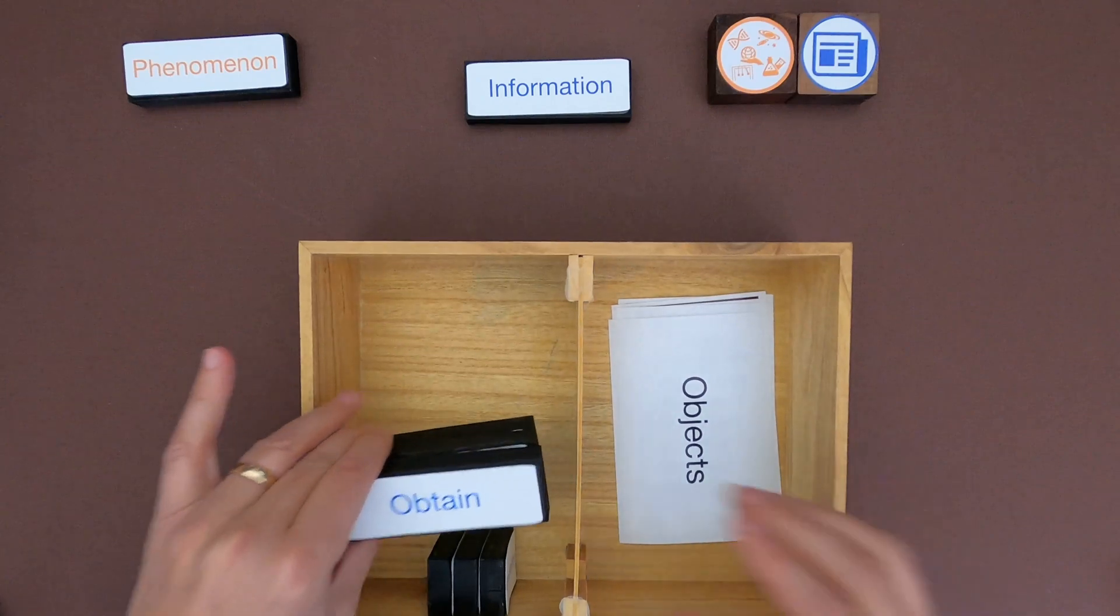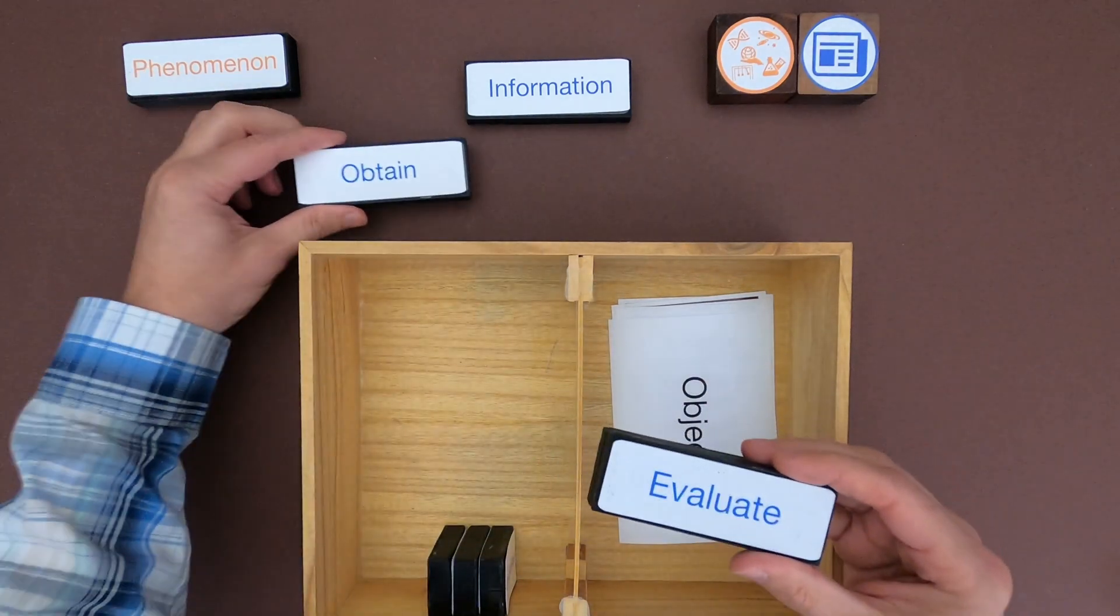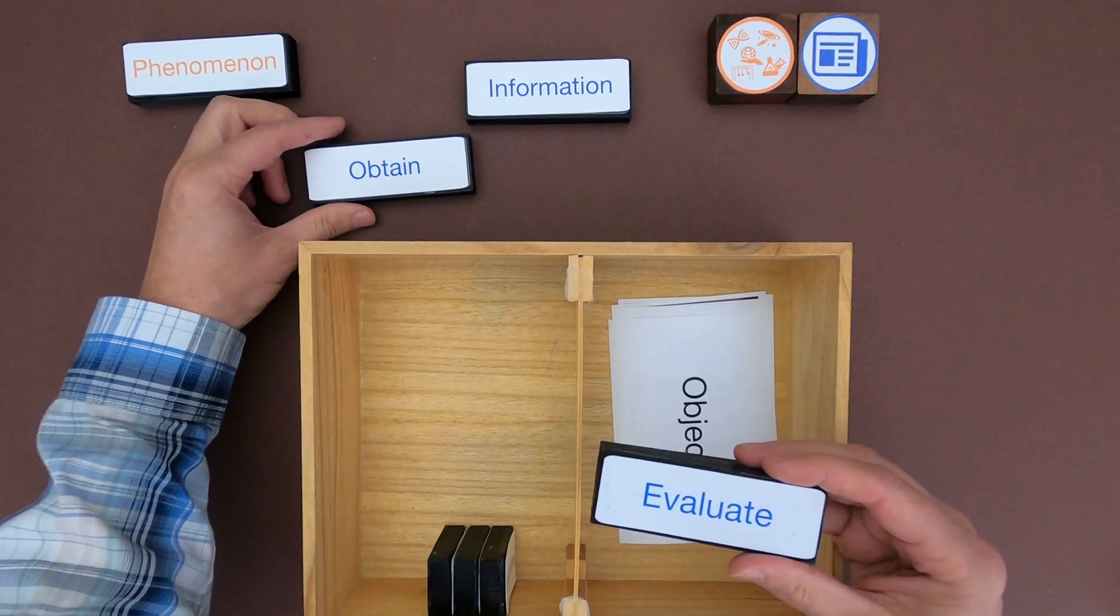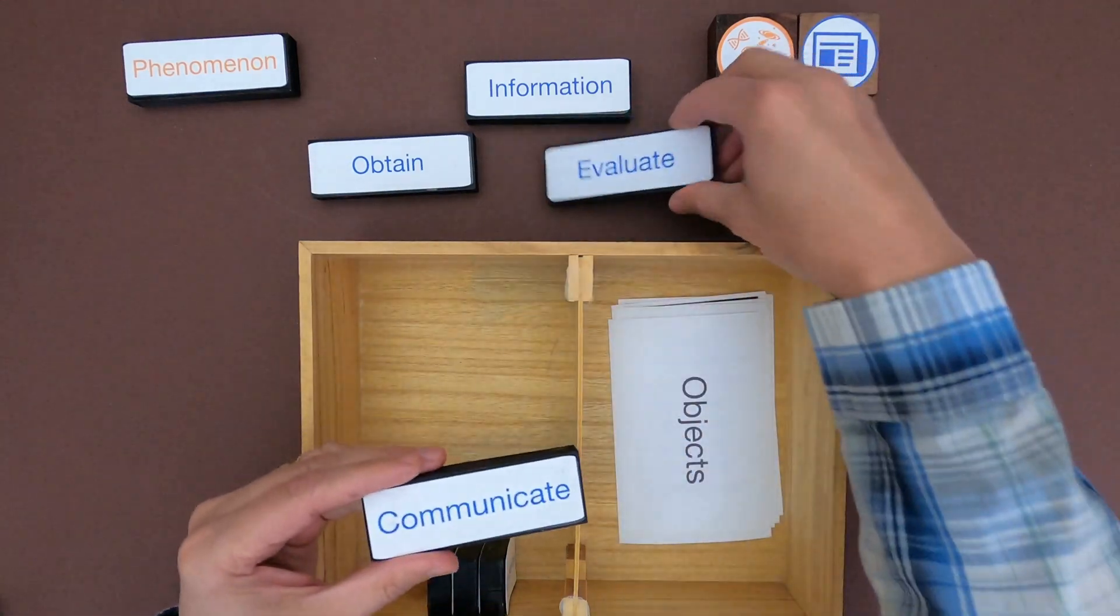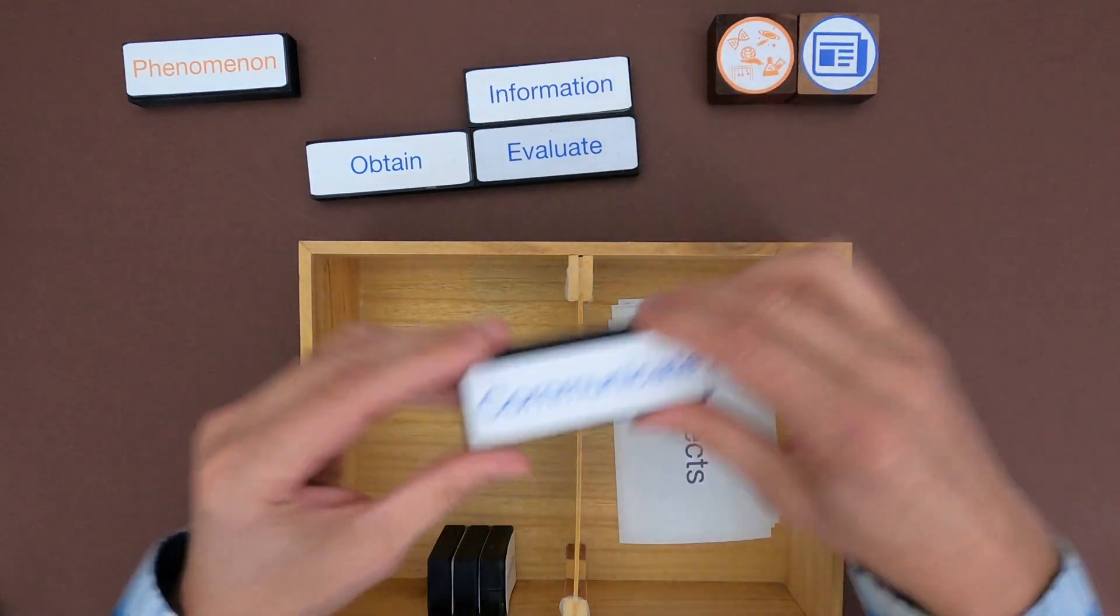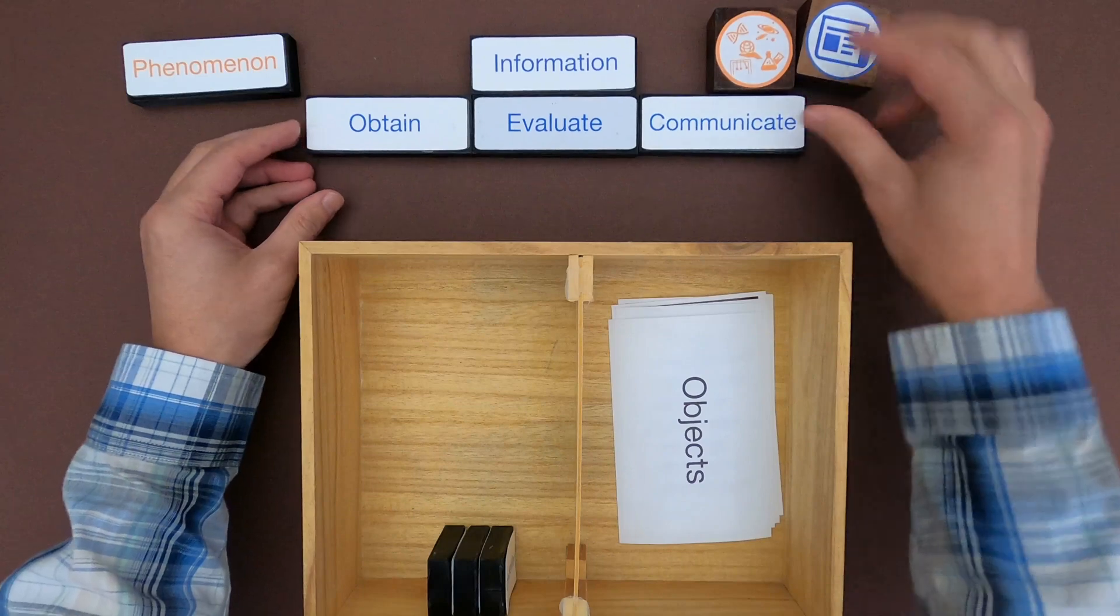Then what you'll do with the information is you will start by obtaining the information, so gathering the information. The next thing you'll do is you'll evaluate the information and then finally you're going to communicate the information.